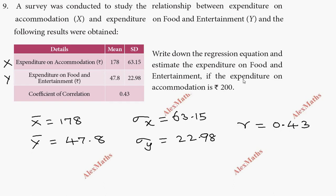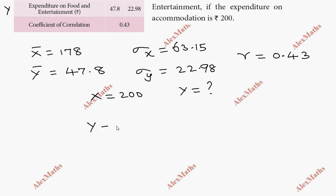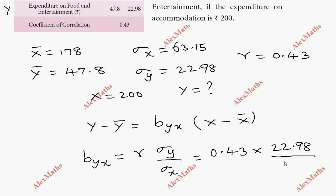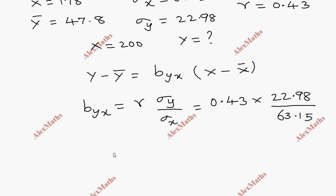The expenditure on food and entertainment is y, and expenditure on accommodation x is equal to 200. We use the regression equation: y minus y-bar equal to b-yx into x minus x-bar. The formula for b-yx is r into sigma y divided by sigma x, so b-yx equals 0.43 into 22.98 divided by 63.15.